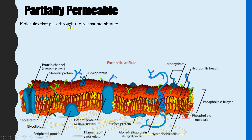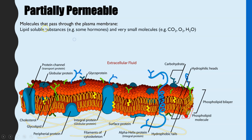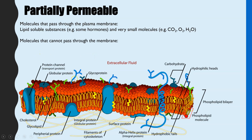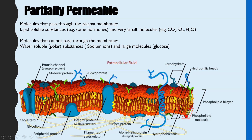The partially permeable membrane refers to only certain molecules being able to diffuse through by simple diffusion across the phospholipid bilayer. Because the bilayer has hydrophobic properties, only lipid-soluble molecules can simply diffuse through — for example some hormones like estrogen. Very small molecules such as the gases oxygen and carbon dioxide, or water, are also small enough to diffuse through tiny gaps. Molecules that cannot pass through by simple diffusion include water-soluble substances larger than water molecules — also known as polar substances, such as sodium ions — or molecules that are too large, such as glucose.